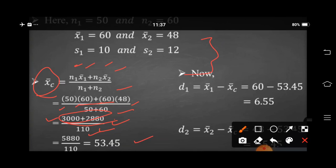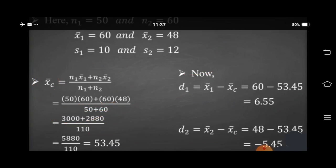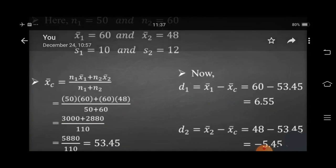For finding d1, according to the formula: d1 equals mean1 minus combined mean. Our mean1 is 60 minus 53.45, giving us 6.55. Then for finding d2: mean2 minus combined mean equals 48 minus 53.45, giving us minus 5.45.